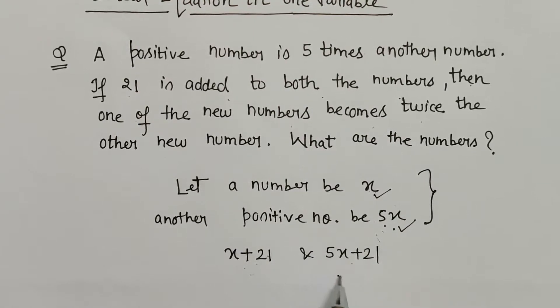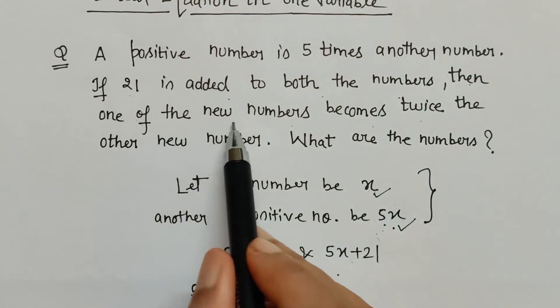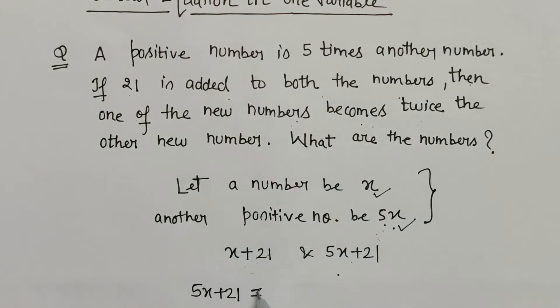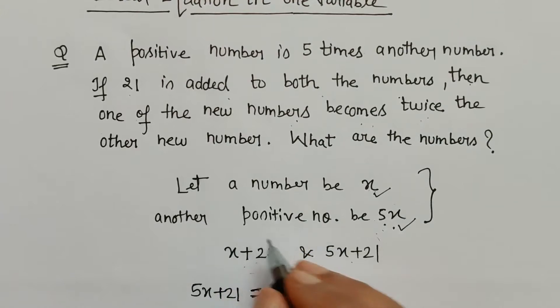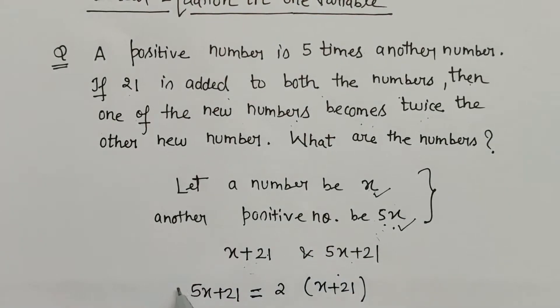So we will be equating this: 5x + 21, this is that new number. So 5x + 21, as per the question, one of the new numbers becomes twice the other new number, twice the other new number, that means x + 21.